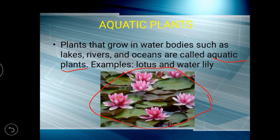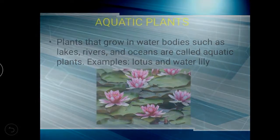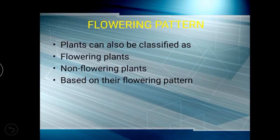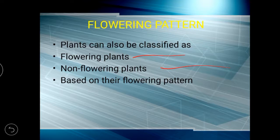Aquatic plants are the plants that grow in water. Examples are lotus and water lily. Next, on what basis can plants also be classified? Flowering pattern. According to the flowering pattern, they are classified into two types: flowering plants and non-flowering plants.